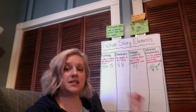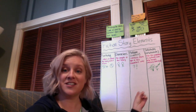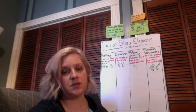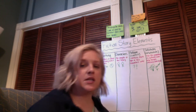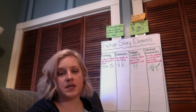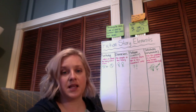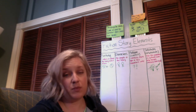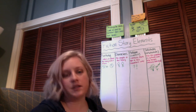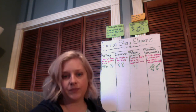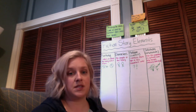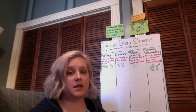So the four story elements that we're going to be focusing on are setting, characters, problem, and solution. Let's focus on those one at a time very quickly. Setting is where and when the story takes place. In a short story you might just have one setting, but in a longer chapter book that setting is going to change a lot. Think about Number the Stars — the setting was Denmark in World War II.